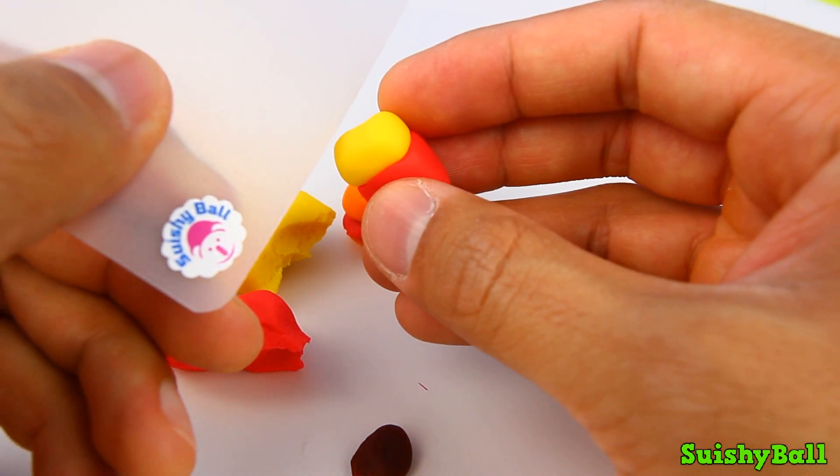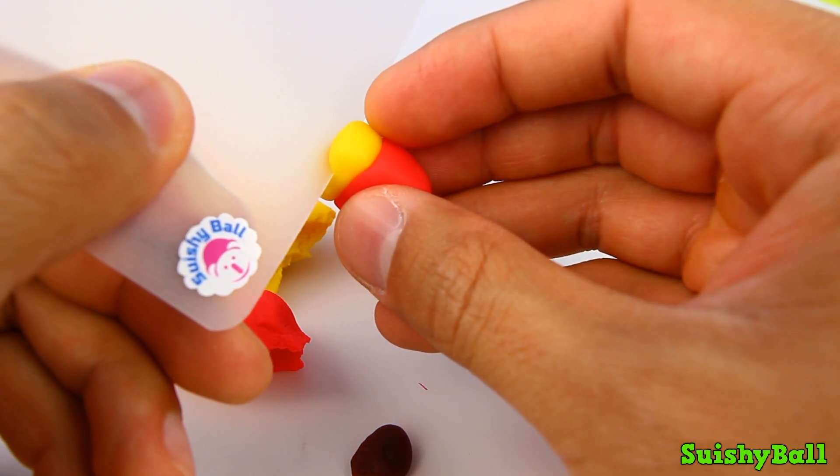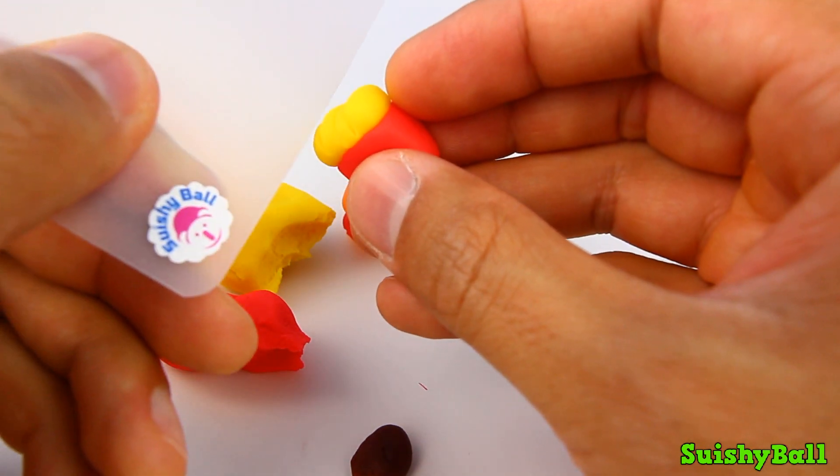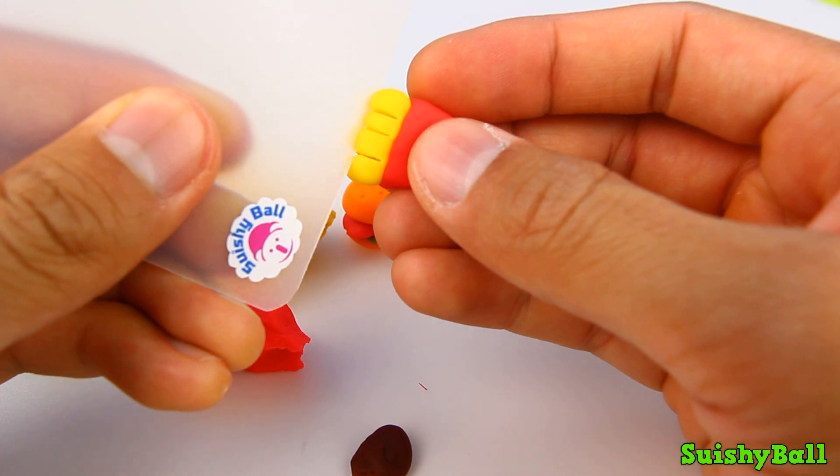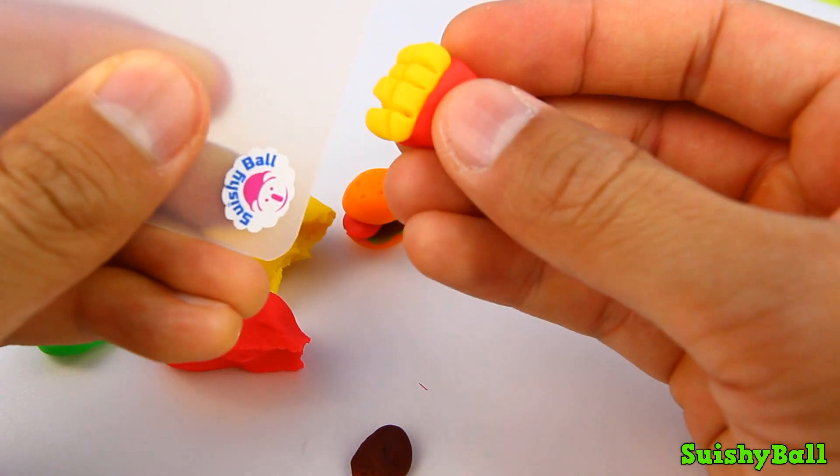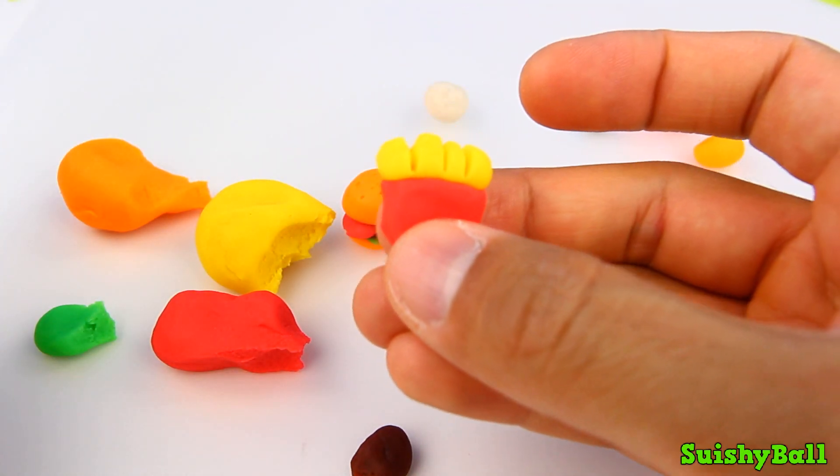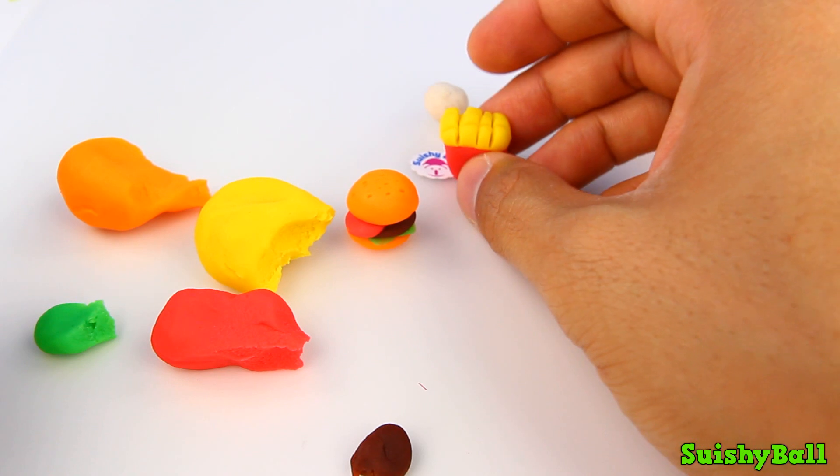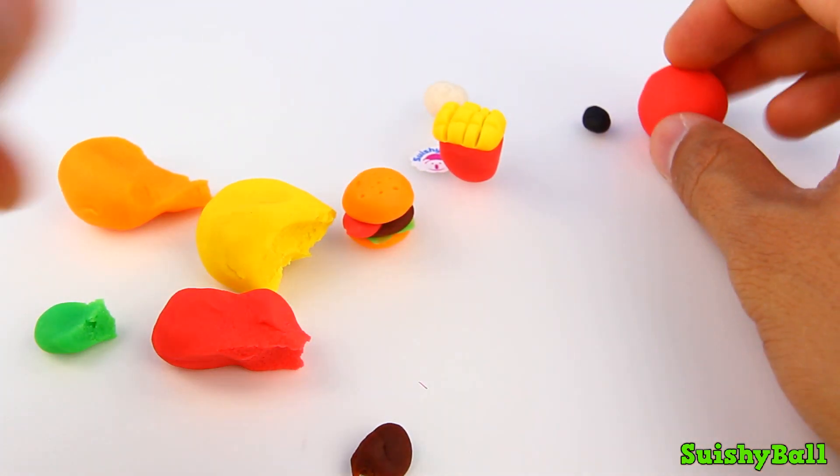Next I'm going to cut some lines in the yellow part so they look more like fries, so adding just a little bit of detail here. Okay, they look a little bit more like french fries now.